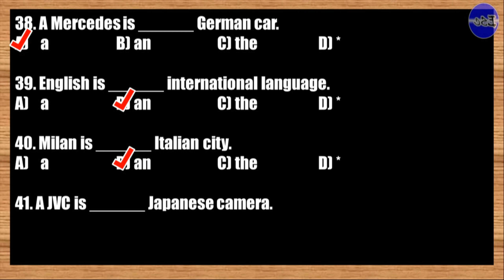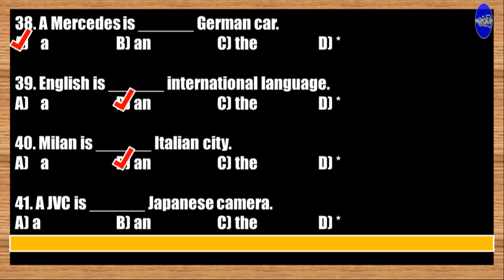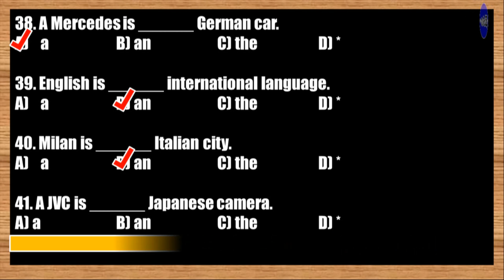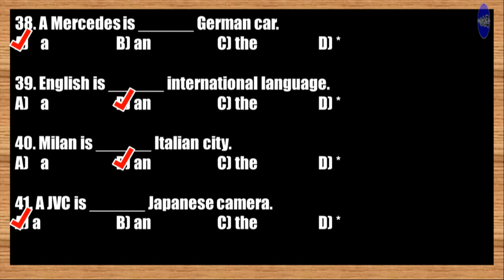Number forty-one: A GVC is blank Japanese camera. A: a; B: an; C: the; D: blank. The correct answer is option A. A GVZ is a Japanese camera.